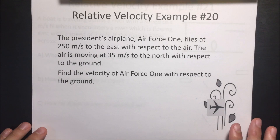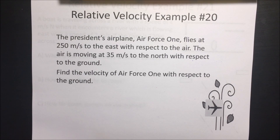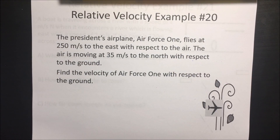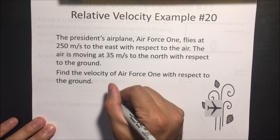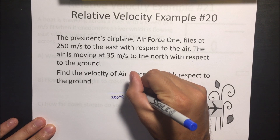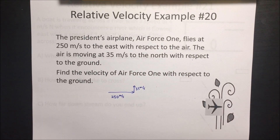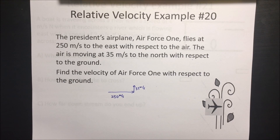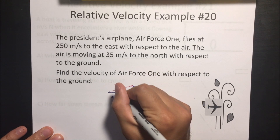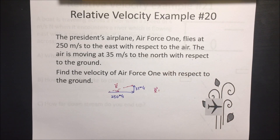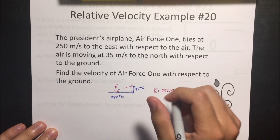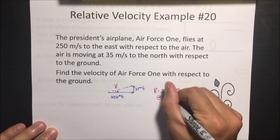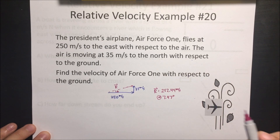Number 20: The President's airplane, Air Force One, flies at 200 meters per second to the east with respect to the air. The air is moving at 35 meters per second to the north with respect to the ground. Find the velocity of Air Force One with respect to the ground. The airplane is going 200 meters per second and the wind is pushing it upward at 35 meters per second. We find the resultant vector: 252.44 meters per second at an angle of 7.97 degrees. We use the Pythagorean theorem and inverse tangent to find these values.